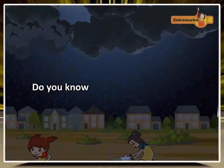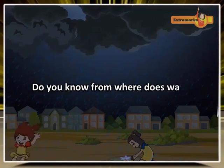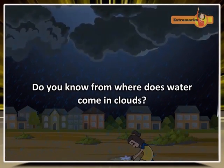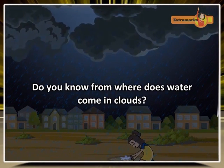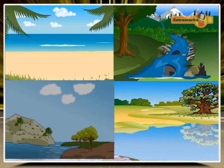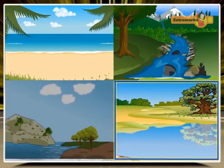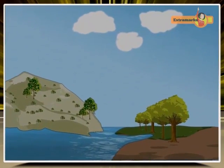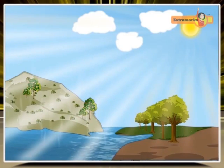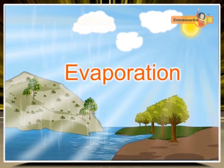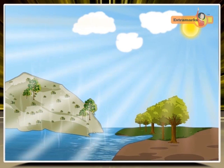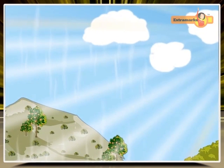Do you know where water in clouds comes from? Let's understand how the water cycle works in nature. Water in oceans, rivers, lakes and ponds heats up by solar heat and converts into vapors. This process is called evaporation.